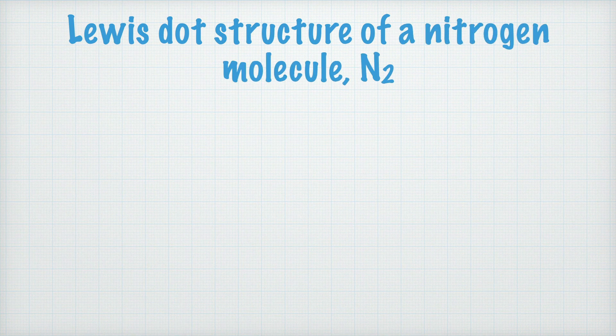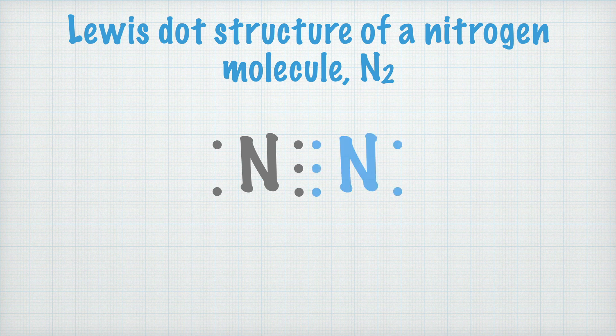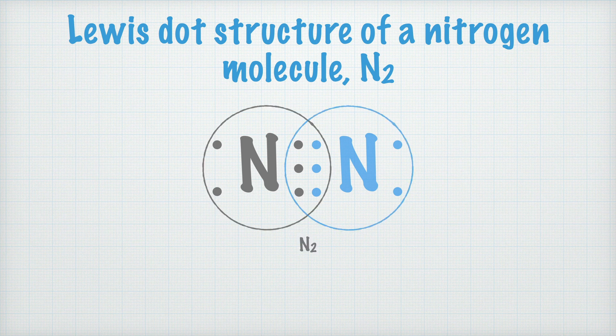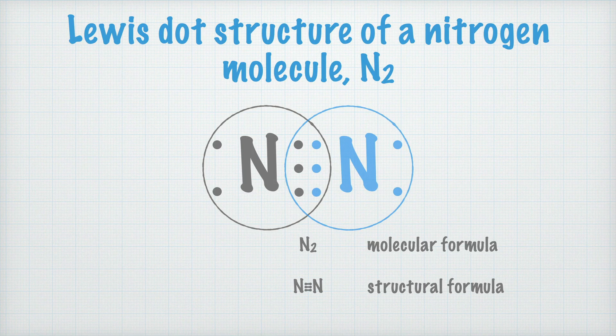Let's also examine the Lewis dot structure of a nitrogen molecule. Nitrogen has five valence electrons, which means that in order to get noble gas structure, it must borrow three electrons from somewhere. Moving those electrons to one side of the atom, it is clearer that a nitrogen atom may share three electrons with another nitrogen atom. The nitrogen atoms now share three electron pairs. The molecular formula is N₂, and in the structural formula we write three dashes between the nitrogen atoms to show there are three electron pairs between them. This is called a triple bond.